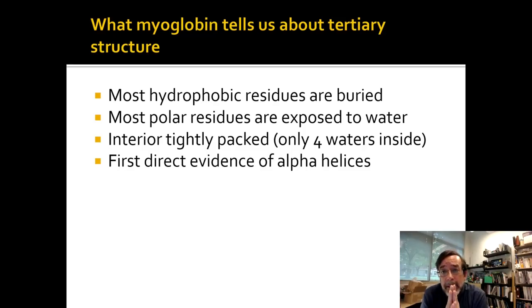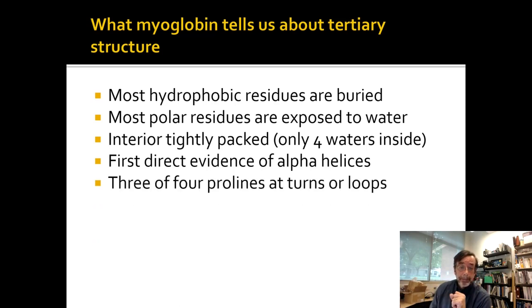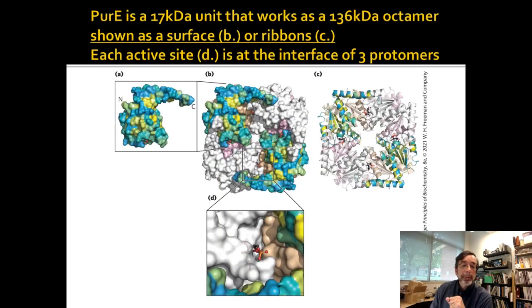It was the first direct evidence that they had that Herman Branson was right, and other people said Linus Pauling and Robert Corey as well, but people already hear about them. Herman Branson was right, alpha helices are there, and it was the alpha helix and not the more loosely formed gamma helix. Prolines, they were not in the secondary structure. They were not in the alpha helices. Three of the four of them were at turns or loops. So that means that most prolines aren't compatible with either alpha or beta secondary structure.